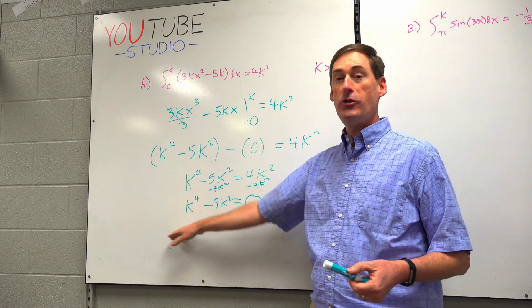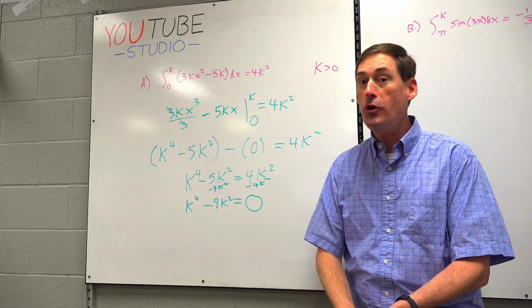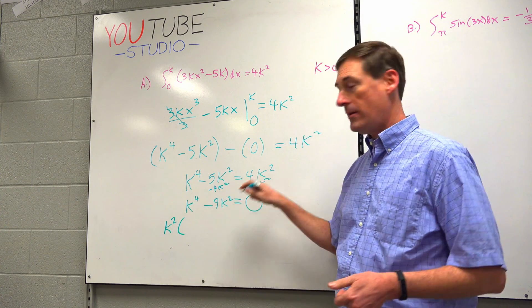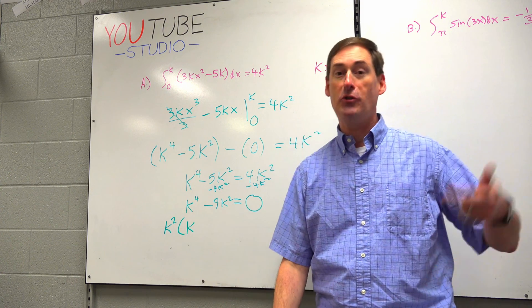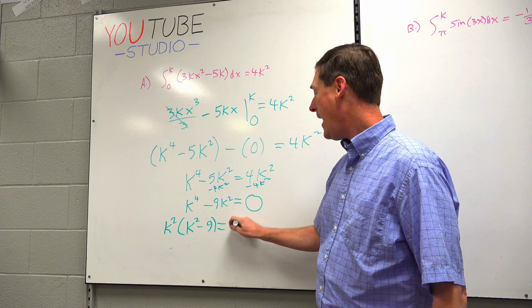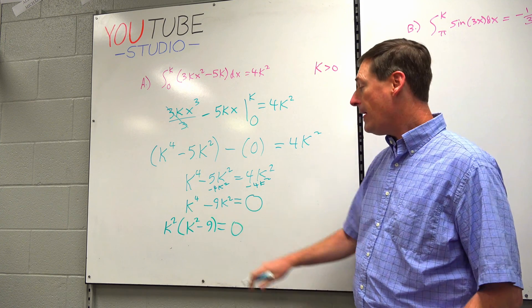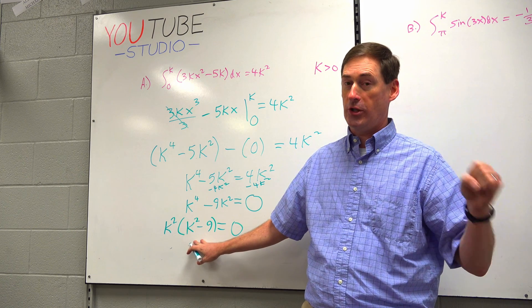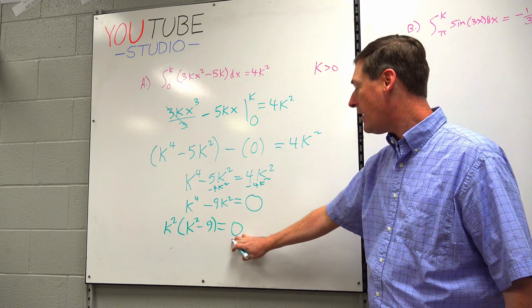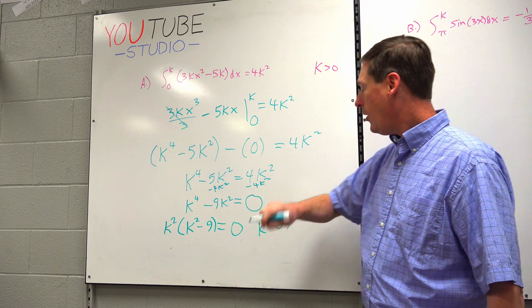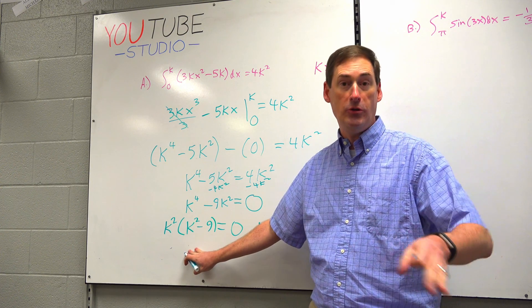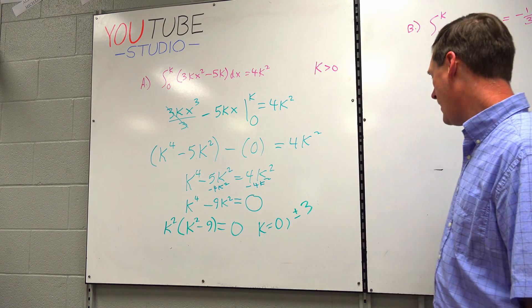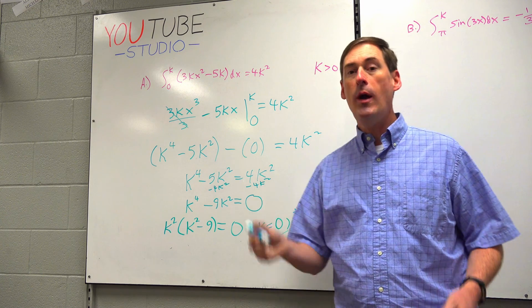We have fourth powers and K squareds. That's two different kinds of powers. You must get the problem equal to zero, or you will never be able to fully solve it. So you subtract the 4K squared over to here. K to the fourth minus 9K squared. When you solve an equation, step one, you get it equal to zero. Step two, if you see it, you factor out the greatest common factor, which in this case would be K squared. That's K squared times K squared minus 9. That's the difference of two squares. That factors into K plus 3 and K minus 3.